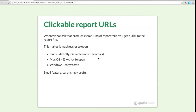The first feature is one of my favorites added since Gradle 1.0 — probably the smallest and most simple to implement, but it has a big impact. When a task that produces a report fails, it will now print a full URL to the report right on the command line. You can click that URL to open it directly in your browser or whatever application reads that file. On Linux, most terminal implementations make links clickable. On macOS, hold Command and click to open.